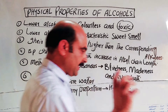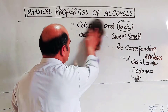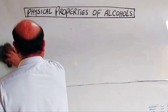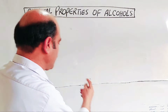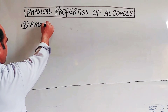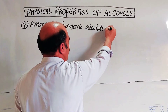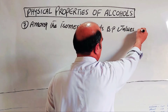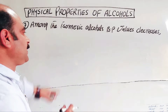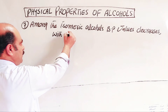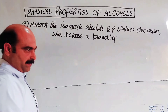Point number seven, physical property number seven: among isomeric alcohols, the boiling point values decrease with increase in branching.